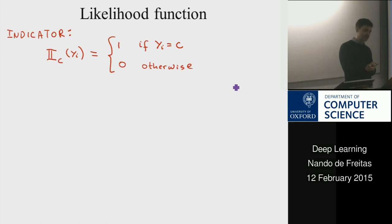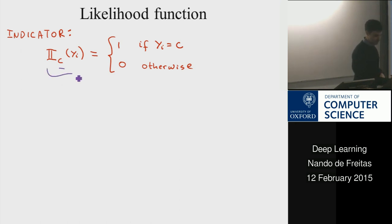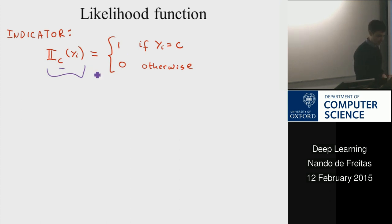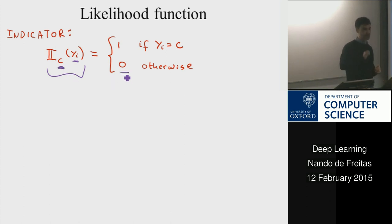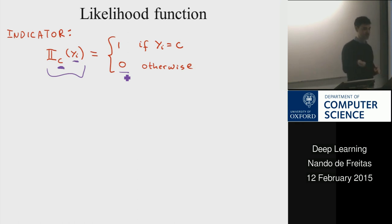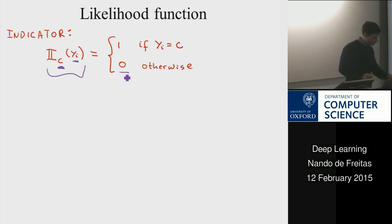An indicator variable 𝟏(yᵢ = c) is a variable that equals 1 if yᵢ is precisely c, and 0 otherwise. It's just a convenient way of checking whether yᵢ equals c.